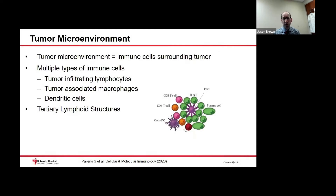The immune cells are important as well. The tumor microenvironment is a term used to describe all the immune cells surrounding a tumor. There are multiple types of immune cells in this microenvironment, including tumor-infiltrating lymphocytes, which are the T cells and B cells, tumor-associated macrophages, and dendritic cells, which are also involved in the immune response.